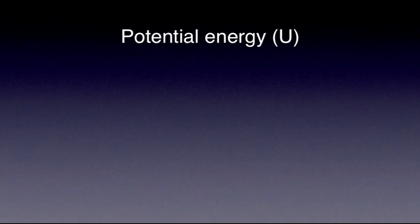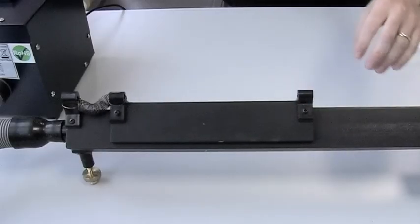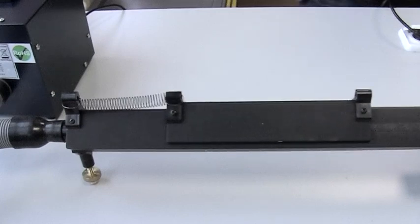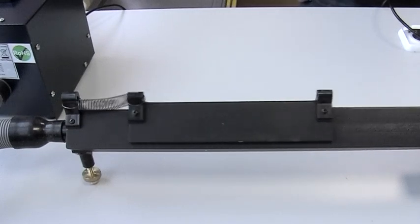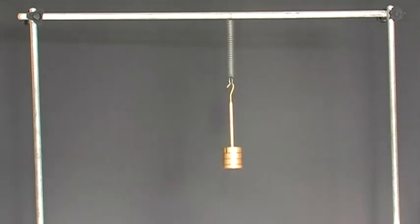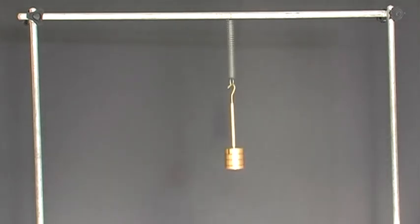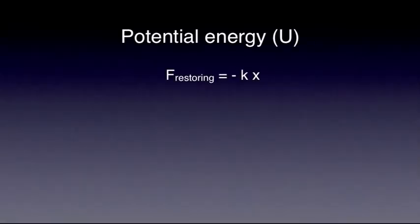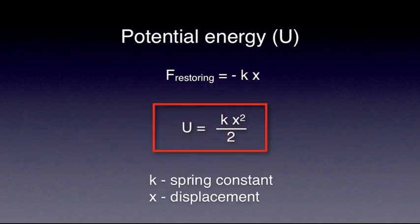The second one is the potential energy associated with the restoring force. In the case of a horizontal oscillator, the force is purely elastic. In the case of a vertical oscillator, the force is a combination of elastic and gravitational. However, in both cases, the restoring force is given by the formula F equals minus kx, and the potential energy associated with it is U equals kx squared over 2.